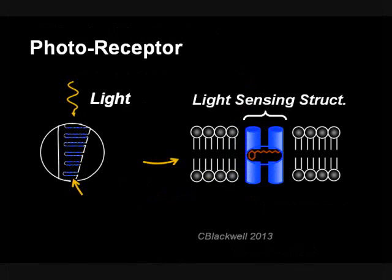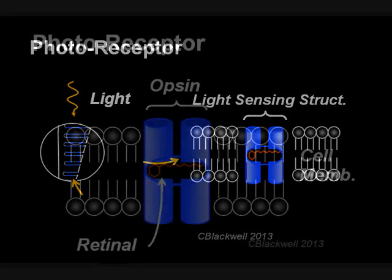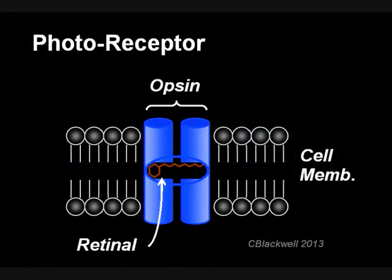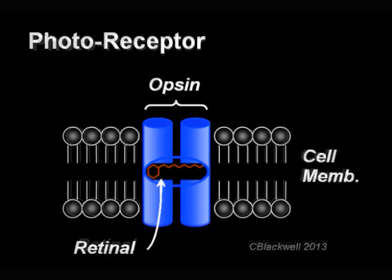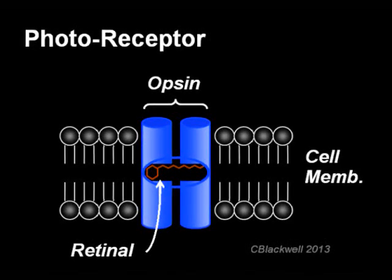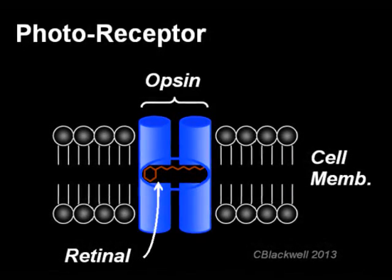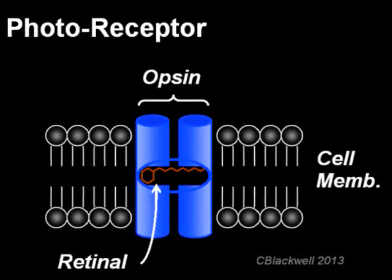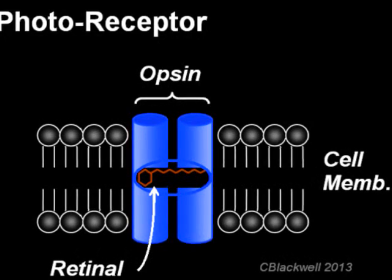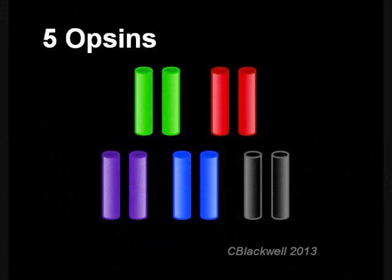In both types of photoreceptors, the light-sensing structure has two parts. Retinal is the molecule that absorbs the photon of light. It is derived from vitamin A. The retinal molecule is embedded in an Opsin protein. The key point for the current discussion is that the retinal is the same for all the colors. It is differences in the Opsin molecule that determine the color of light each photoreceptor is sensitive to.